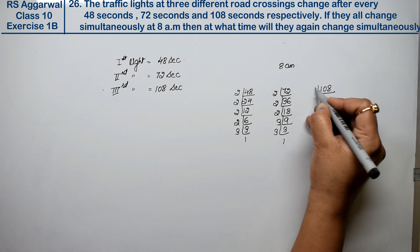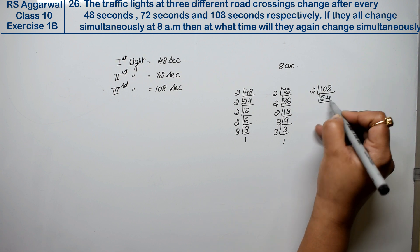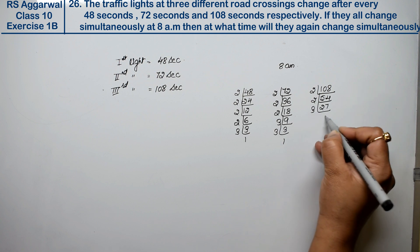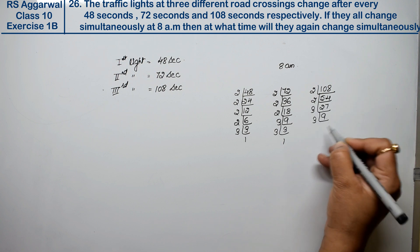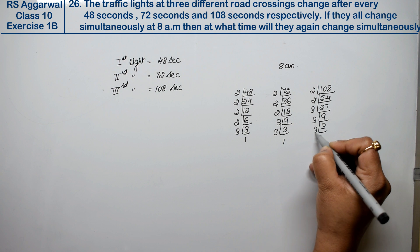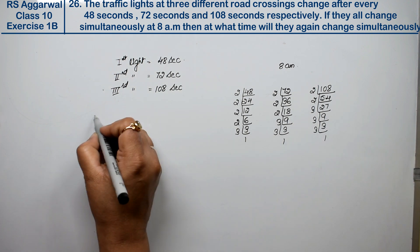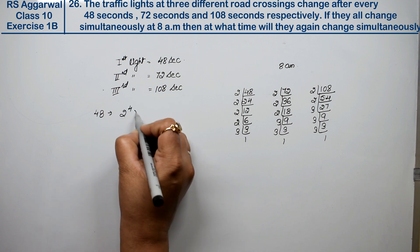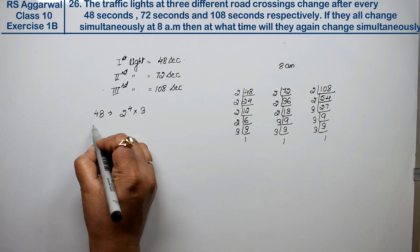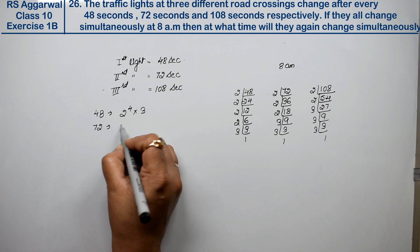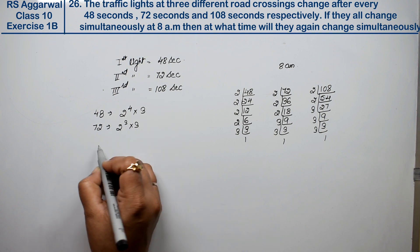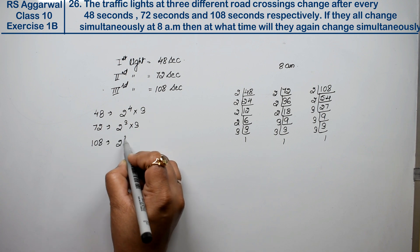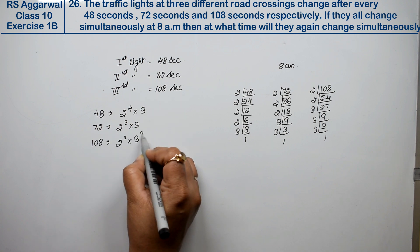For 108: 2, 54, 27, 9, 3, 1. That gives us 2, 2, 3, 3, 3. So 48 equals 2 to the power 4 into 3, 72 equals 2 to the power 3 into 3 squared, and 108 equals 2 squared into 3 cubed.